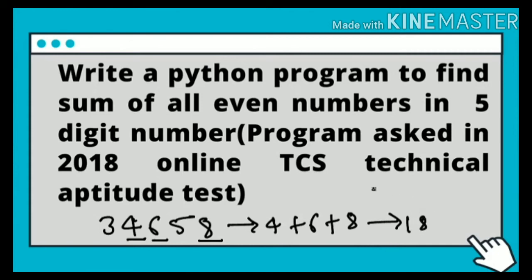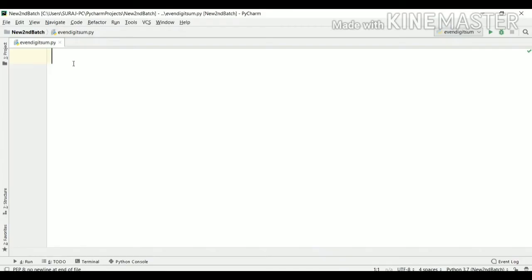So this will be my output. First I need to enter a five digit number, then identify all the even numbers, and then calculate the sum of all even numbers. This is the aim of this particular program, and this program is asked in the TCS Technical Aptitude test — so it is one of the important programs which can be asked in any placement activity. Now in the next section, we'll understand how to write a Python program for this particular aim.